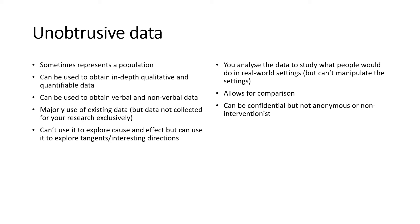Using the same parameters as the other four methods: unobtrusive data is mostly secondary data, but it can represent a population if the secondary data was collected for a large sample. It can be used to obtain in-depth qualitative and quantifiable data, depending on what you've gathered — because you don't collect this data yourself, you acquire it. You can use it for comparison with your primary data, but it won't be generated exclusively for your research; you interpret it to answer your research questions. You can't use it to explore cause-and-effect relationships, but you can use it to explore interesting directions or tangents.